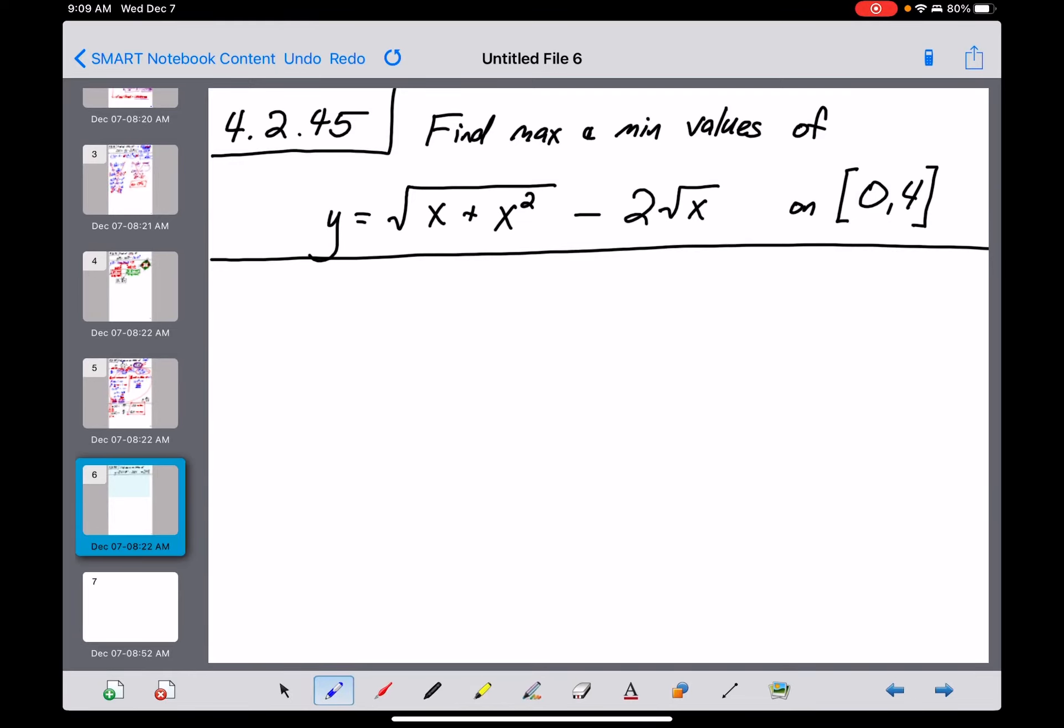Number 45 is asking for max and min values of this ugly function with two different radicals on a closed interval from zero to four. So let's see what we can do.